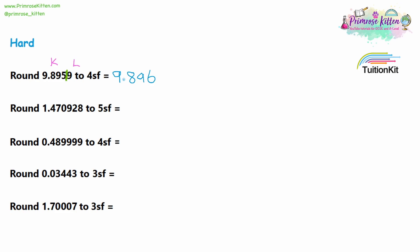For question two, five significant figures. We count up the first five digits: the one, the four, the seven, the zero, and then the nine — we include zeros in the middle of other digits. We rule off there. The first number we're losing is a two, so we are not going to round up. Keeping all the numbers on the left of the line, we have 1.4709. That's our answer.